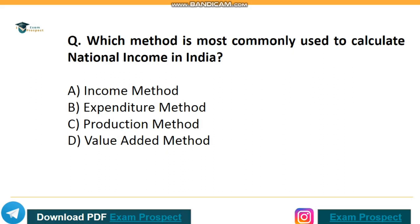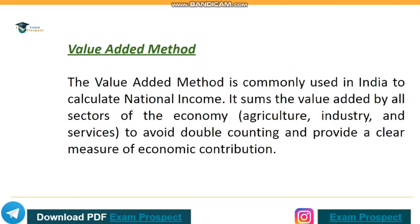Which method is most commonly used to calculate national income in India? The value-added method is commonly used in India to calculate national income. It sums the value added by all sectors of the economy — agriculture, industry, and services — to avoid double counting and provide a clear measure of economic contribution.